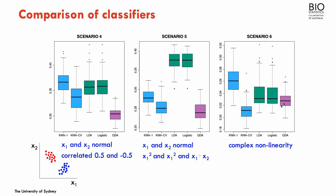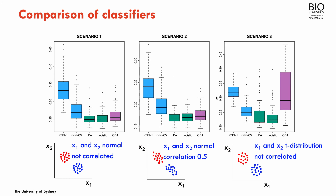In the final setting with complex nonlinearity, the k-nearest neighbor — being the most flexible method — has the best performance compared to LDA, logistic, and QDA, which assume less complexity. As you can see, there is really no single best method for all situations. Some situations are more favorable to specific methodologies, which is why we study all these methods. That said, logistic regression ends up performing reasonably well across several of these settings.